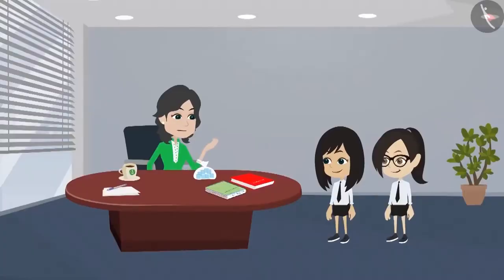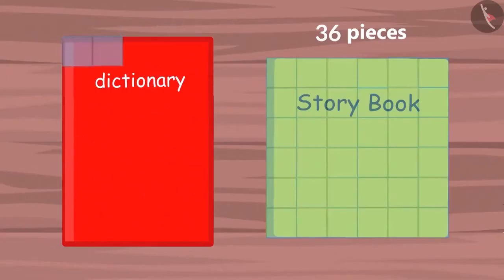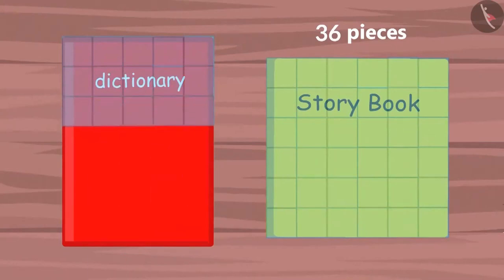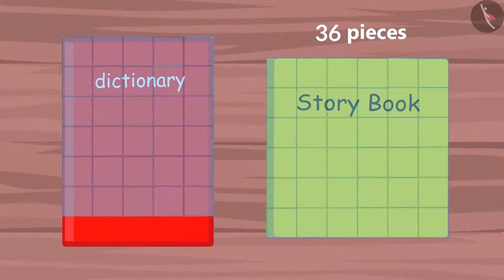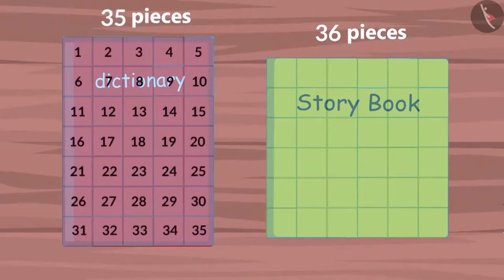Now measure the other book in the same way. Then you will know yourself which book is bigger. Okay, now we will measure the second book. We place these square-shaped pieces on the other book in such a way that no piece is placed on top of another. Now tell me, Vandana, how many pieces did you need to cover this book? We used 35 pieces to cover this book.